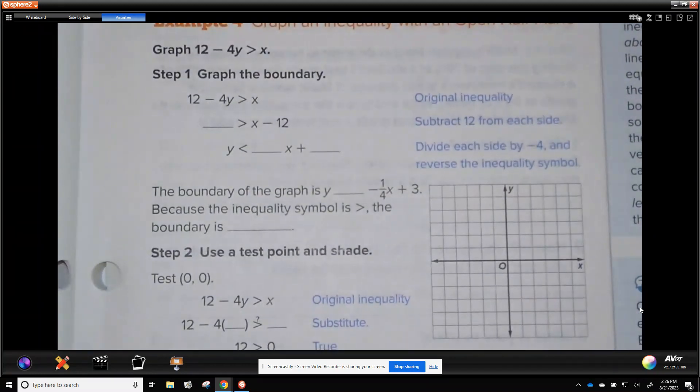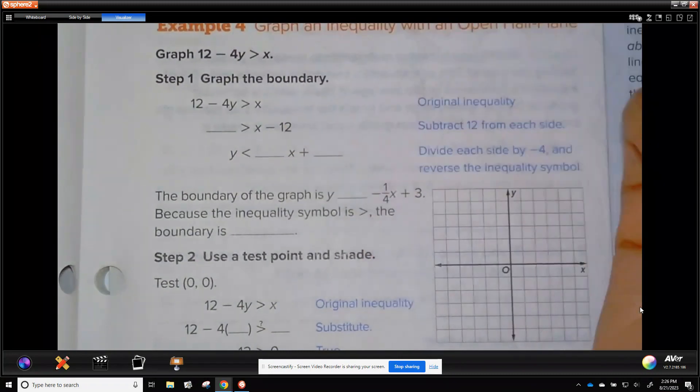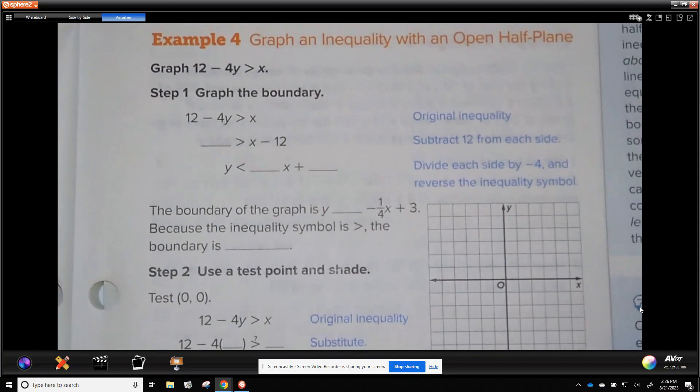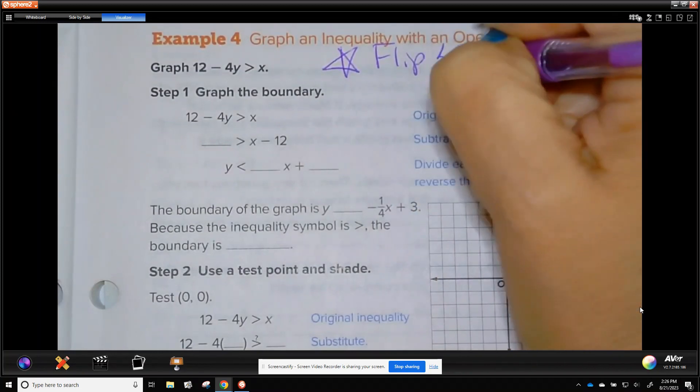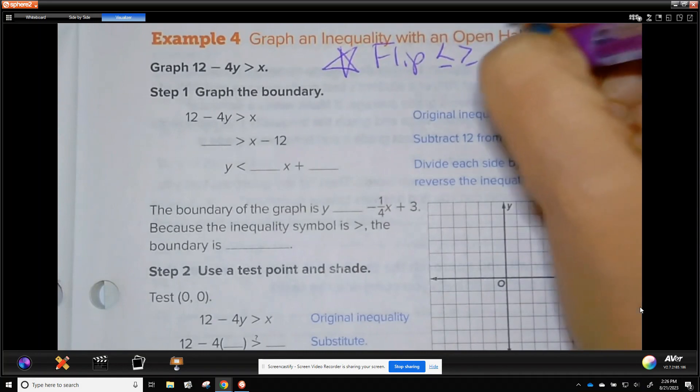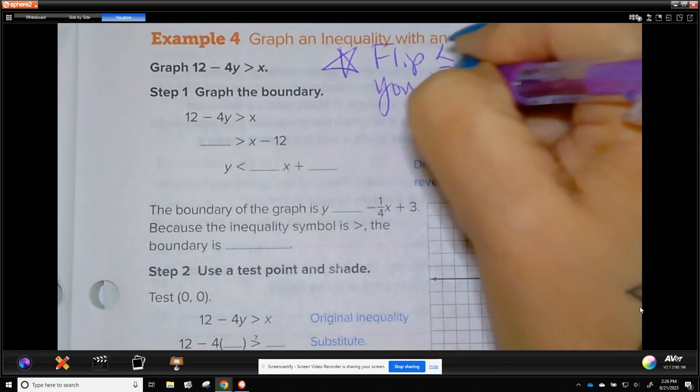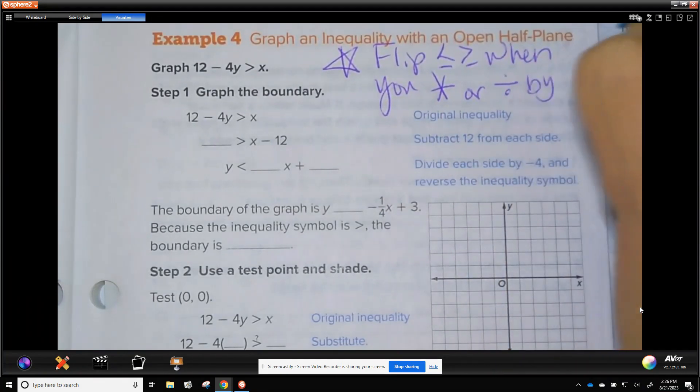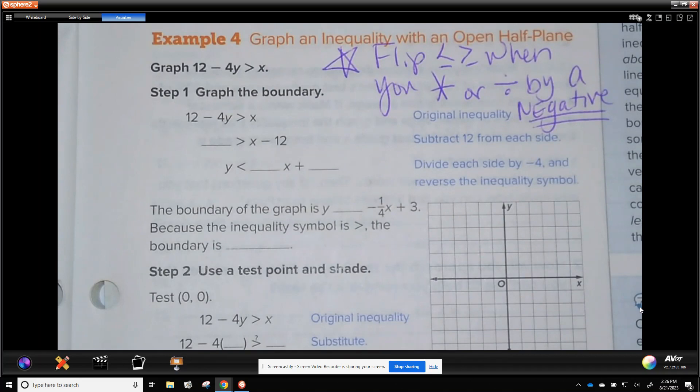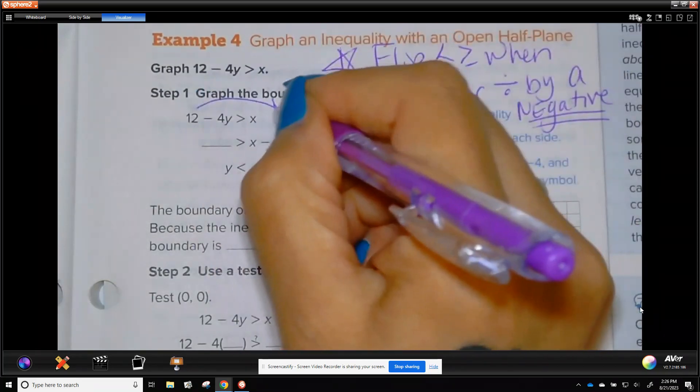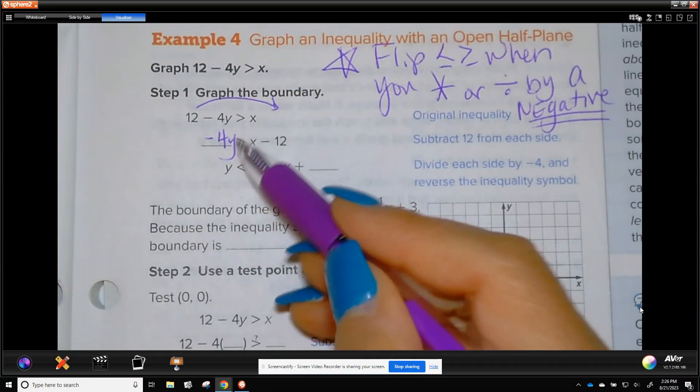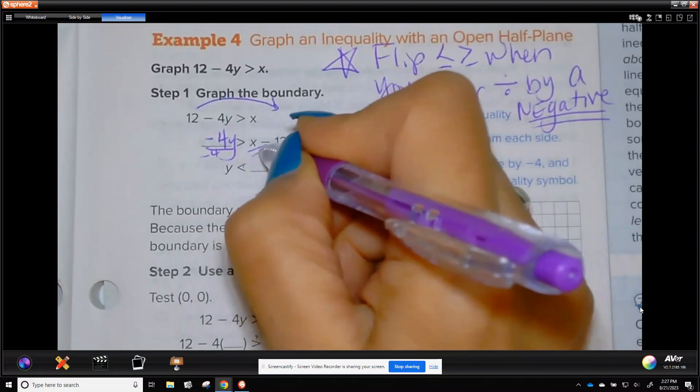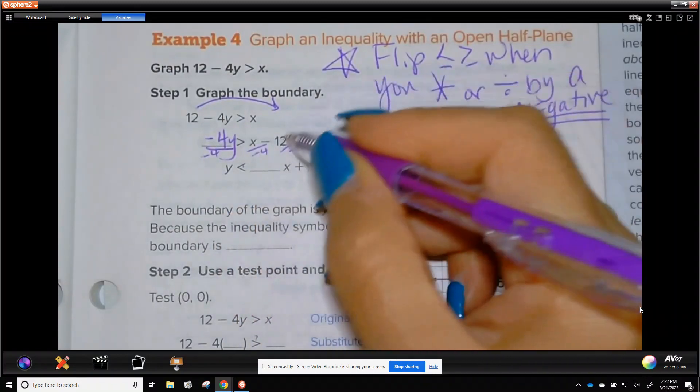So let's graph this. They give it to us like this, which is not any particular form. But one thing before we start working with inequalities, is you need to remember, you need to flip less than or greater than, less than or equal to, greater than or equal to, an inequality symbol. So when you multiply or divide by a negative number. So this one, we start off with the 12 moves over there, becomes negative. But this negative 4y is going to cause this symbol to go from greater than to less than. But we have to divide by negative 4, divide by negative 4, divide by negative 4.